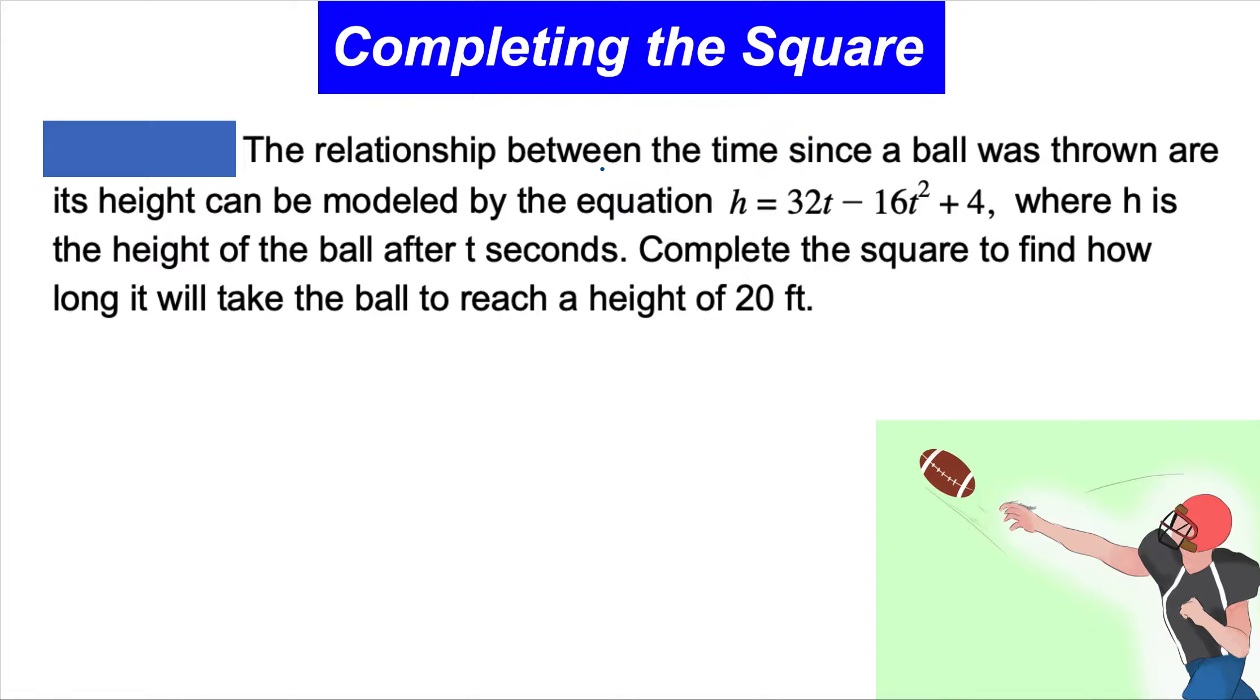In this equation, we have h = 32t - 16t² + 4. The question asks at what time the ball reaches 20 feet high. Instead of h in the equation, we're going to plug in 20.